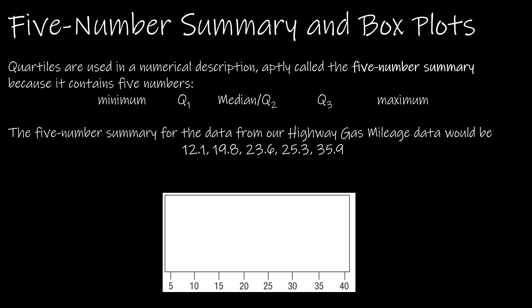When we were finding the quartiles using Excel, we talked a little bit about the fact that you could use Q0 to find the minimum and Q4 to find the maximum. And that's really what we're doing here — we're finding the five quartiles. Now you might be thinking, 'wait, quart is four, so why are we finding five values?' Well, the quartiles are going to split our data into four parts.